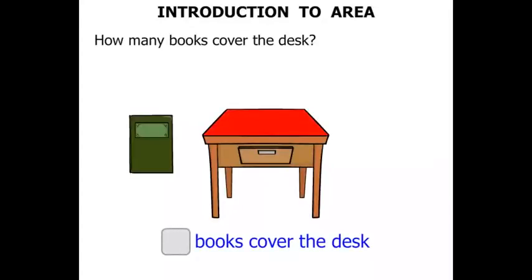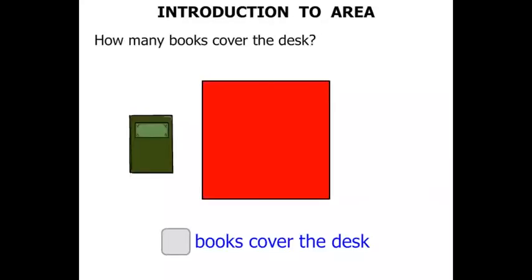Let's look at the top of the desk. It's drawn at an angle, but if we were to look directly on top of the desk, we'd actually see a square shape. Let's start moving the books to cover the desk.